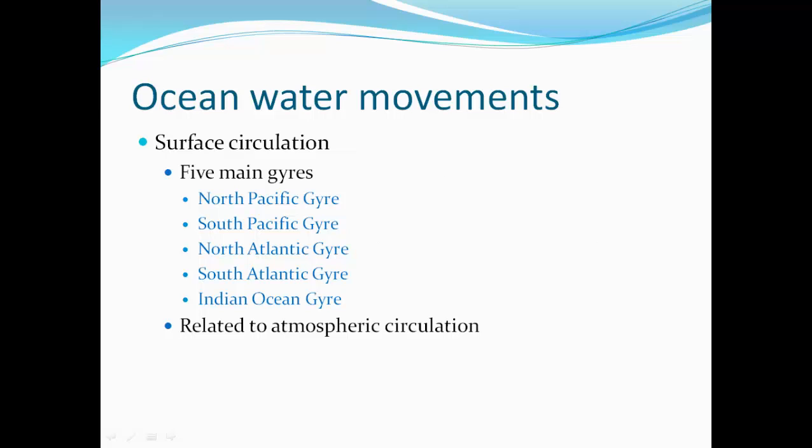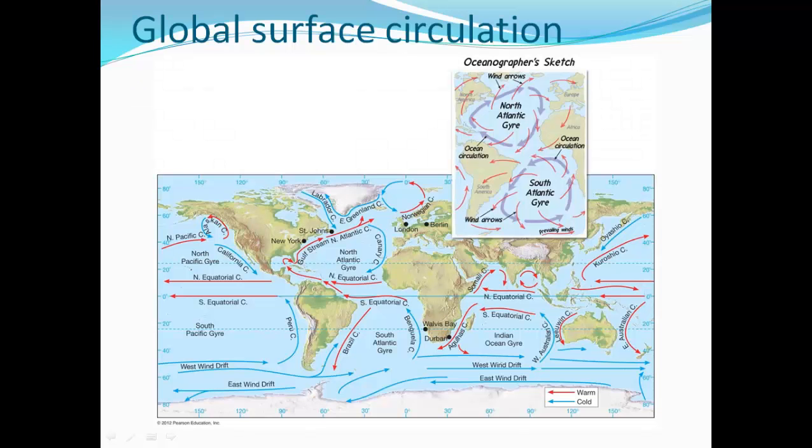On surface circulation we have five main gyres: the North Pacific gyre, South Pacific gyre, North Atlantic gyre, South Atlantic gyre, and Indian Ocean gyre. These are related to atmospheric circulation.